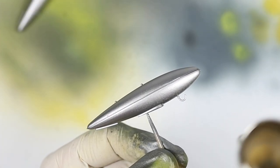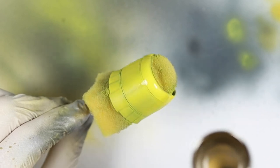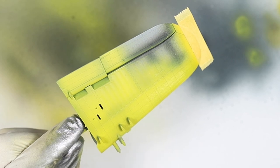I applied Vallejo Chipping Fluid to all desired parts as usual. After it dried I started spraying the other colors. Unfortunately the result was not as expected.